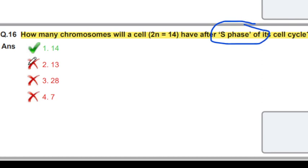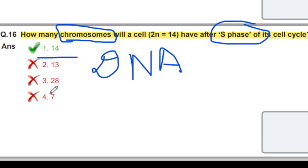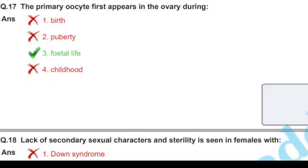In S phase, the number of chromosomes remains 14. During S phase, the chromosome number doesn't change, it stays at 14. Only the DNA doubles, but the chromosome number remains the same at 14. I hope you understand this.